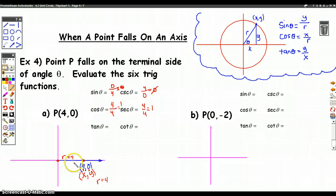Tangent is y over x which is 0 over 4 and that's equal to 0. And cotangent would be 4 over 0 but that's undefined.